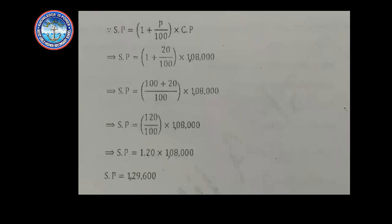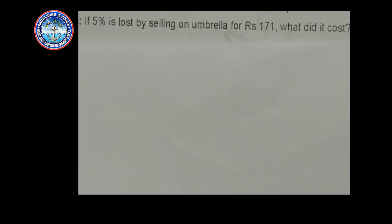You can also find the cost price using the same formula. Here is another question: If five percent is lost by selling an umbrella for rupees 171, what did it cost? Here the loss percent is five percent and the selling price is 171. We need to find the cost price, so write down the formula.